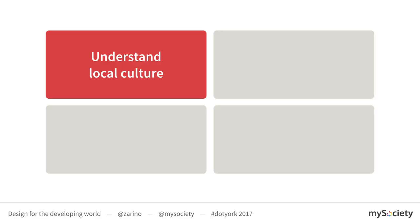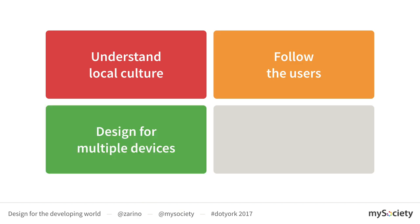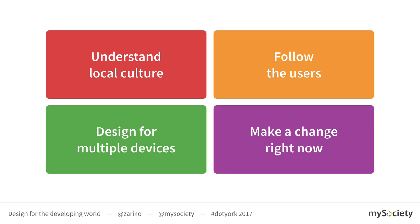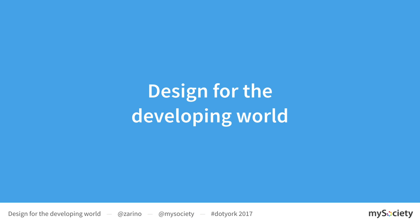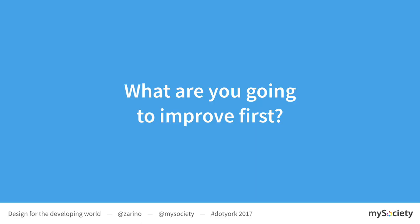Putting it all together: we had understanding local culture, following the users whether figuratively or literally, designing for multiple devices, and trying it out now — iteratively making a change now. I called it 'Design for the Developing World', but it's actually really 'Design for the Whole World', because this is stuff you should all already know and can already try out. My question to you is: what are you going to try and improve first? Thank you very much.